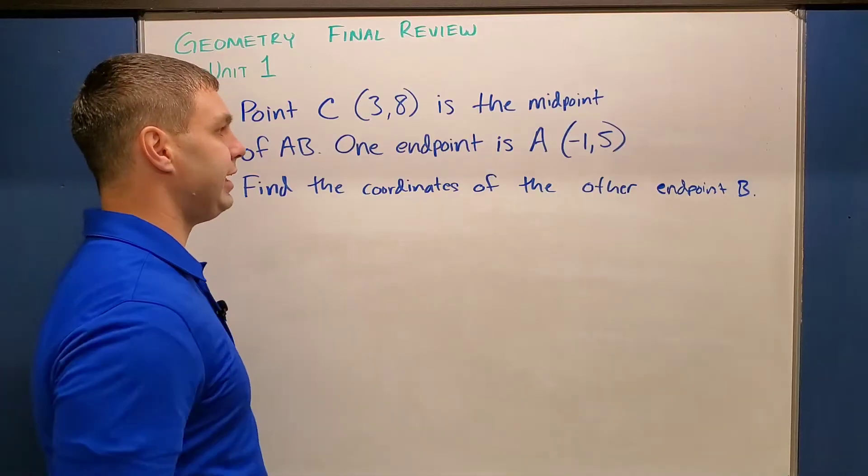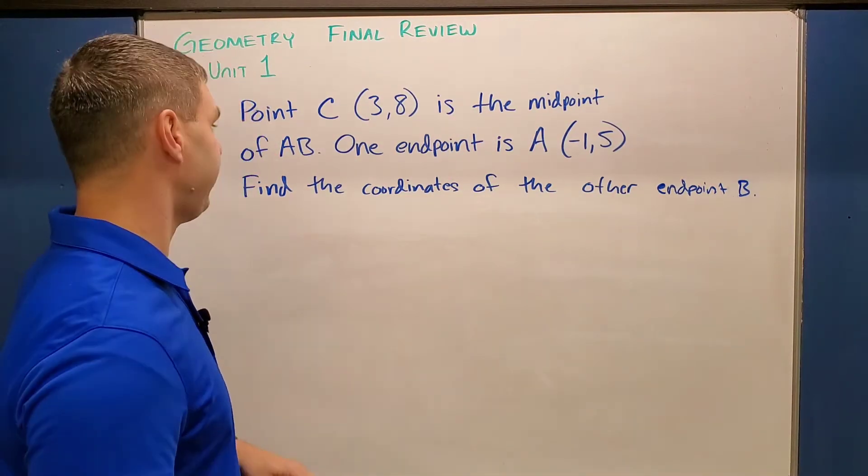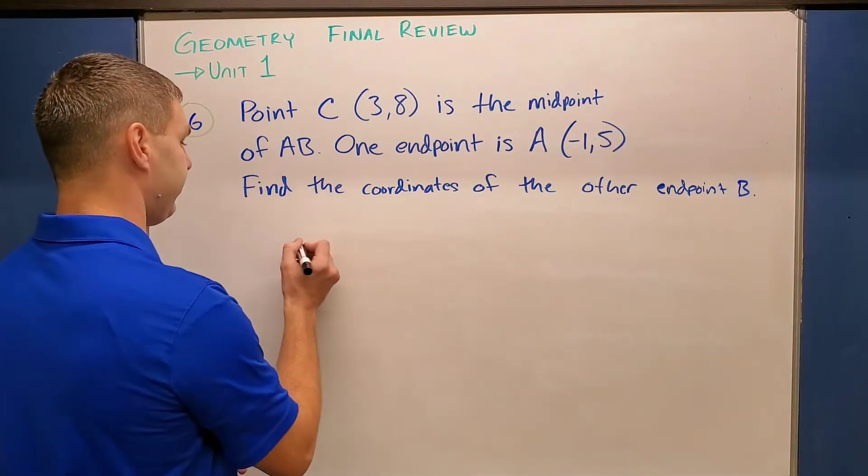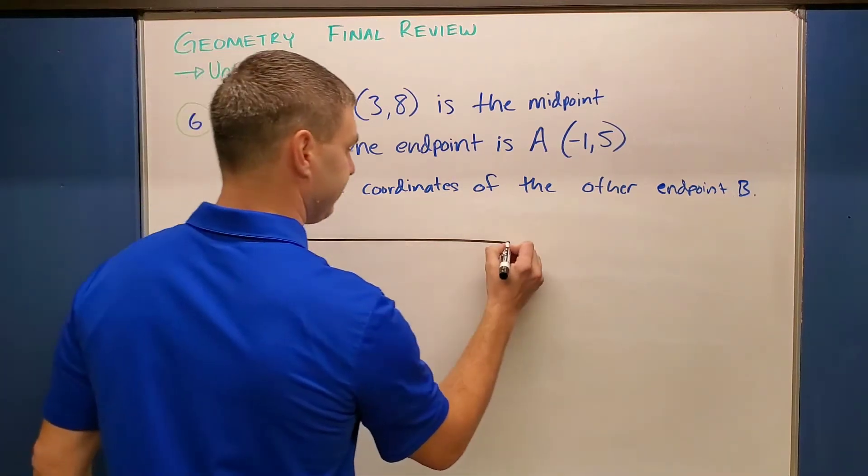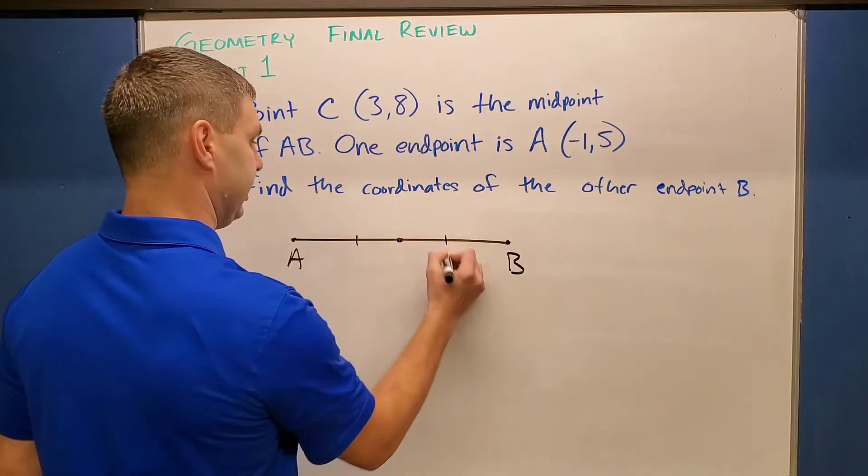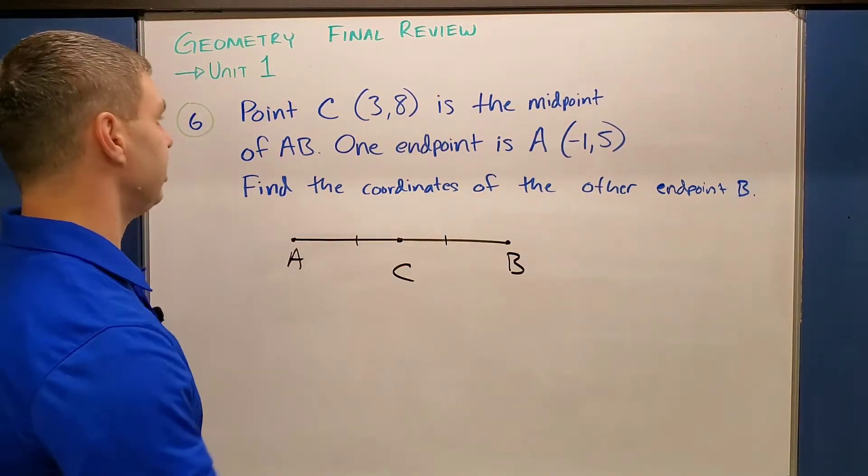Let's get into this first one up here, which says point C(3,8) is the midpoint of AB. One endpoint is A(-1,5). Find the coordinates of the other endpoint B. So this is telling us that we have a line segment AB. A on one side and B on the other with our midpoint C, where those two are the same and so C is going to be in the middle. And it gives us the coordinates of each of those points.